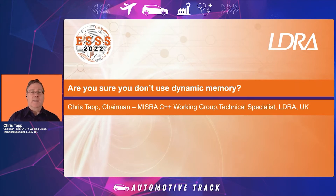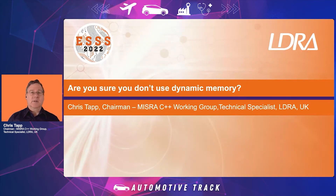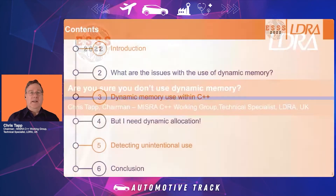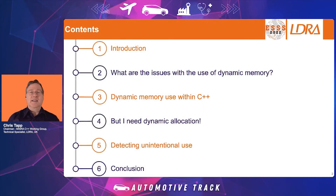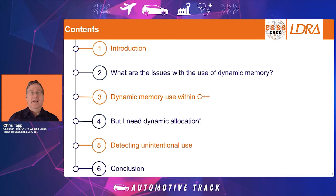Today I'd like to talk about dynamic memory: what impact it has on software, when it can cause us problems, and the fact that sometimes we may end up using dynamic memory when we don't think we actually are. We'll look at what the issues are with dynamic memory, how it's used within C++, what can be done if a project needs to use dynamic memory allocation, and ways of detecting accidental or unintentional use of dynamic memory.